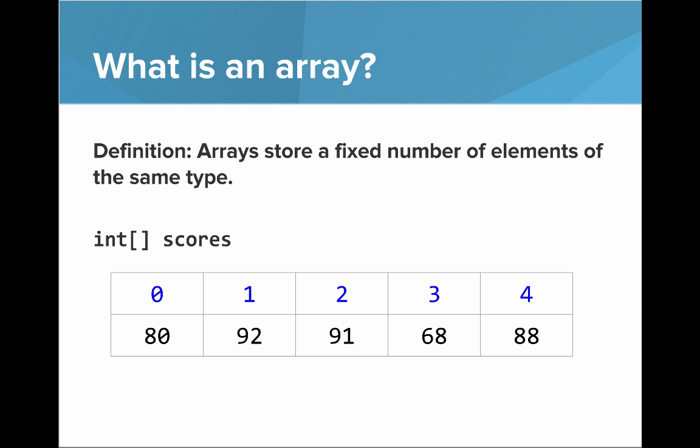So remember the definition: arrays store a fixed number of elements of the same type. Here I've added a new blue row of numbers. We can see that the black numbers represent the elements or the individual values in the array. And the blue numbers represent the indices or what position we are at in the array. So we start at zero, go up to four.